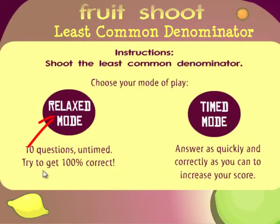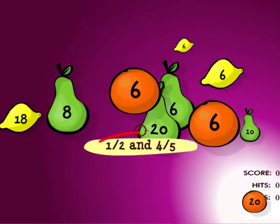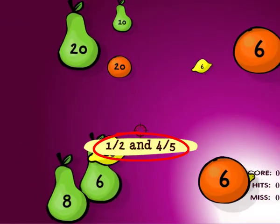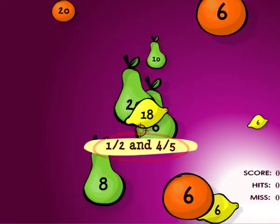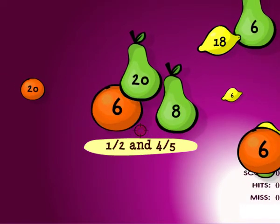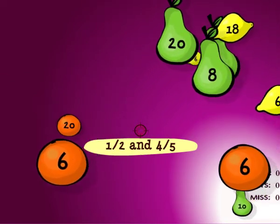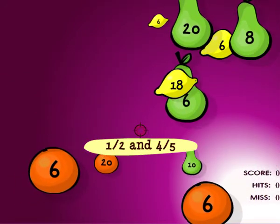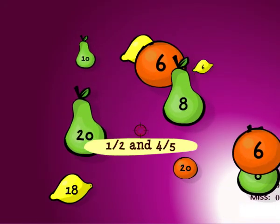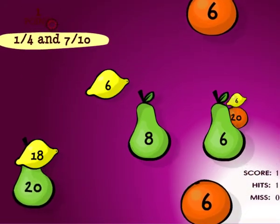You can practice in relaxed mode, or beat the clock for a high score. Just watch the cursor for a set of fractions, like one-half plus four-fifths, and find the least common denominator. What are the multiples of two? Two, four, six, eight, ten, and ten is a multiple of five as well. So, the least common denominator is ten. I click on the fruit that says ten and score.